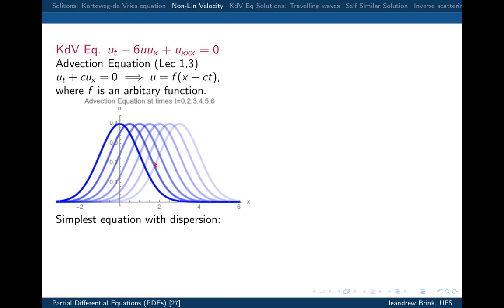So, this is the wave equation — the advection equation. Another property that comes from the third-order term is dispersion. The simplest equation with dispersion looks like this: it has the advection part and then epsilon times the third derivative. That's where dispersion comes in. We have all the techniques to solve equations like that because it's linear, and the Fourier analysis techniques we used basically apply here as well.